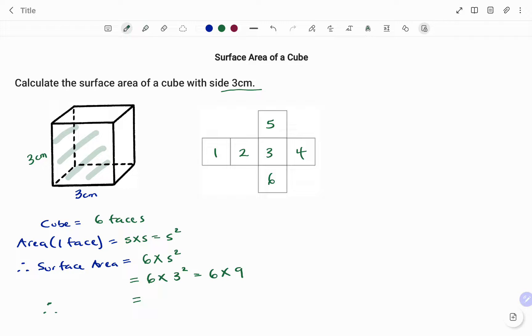The surface area—going to take that as SA—equals 6 times 9, which equals 54 centimeter squared. Thanks for watching, bye!